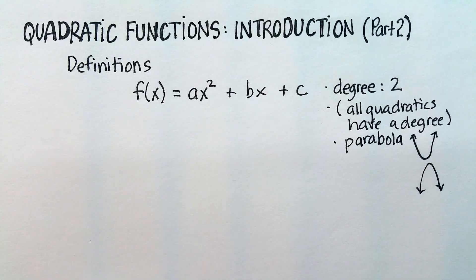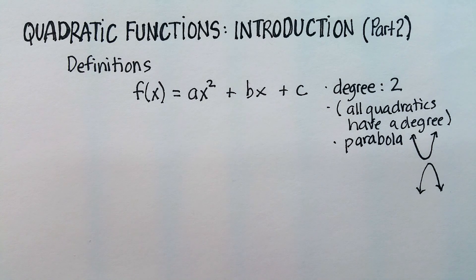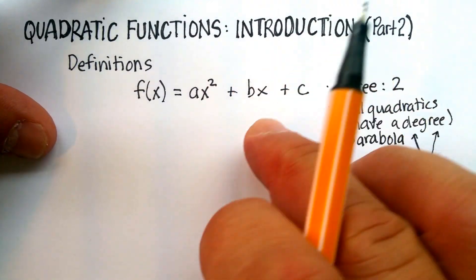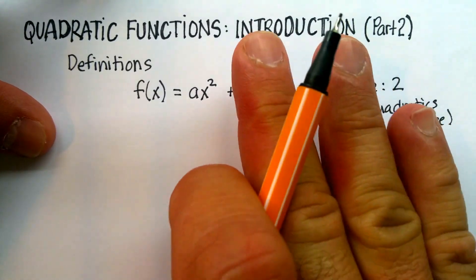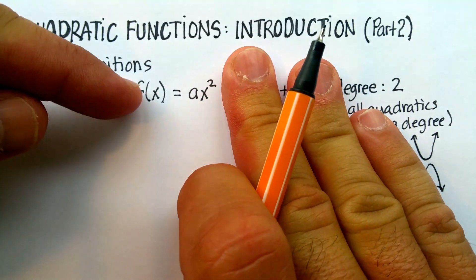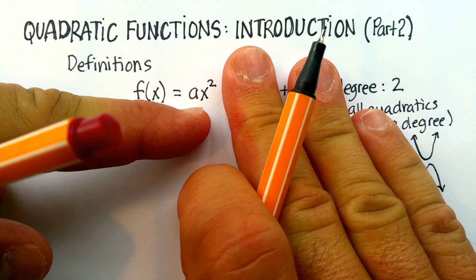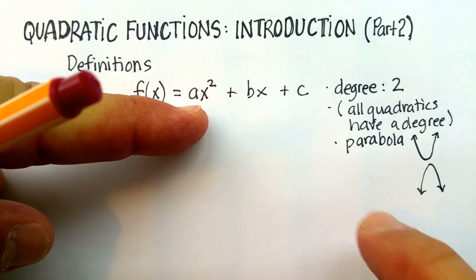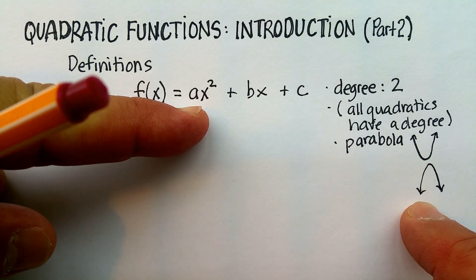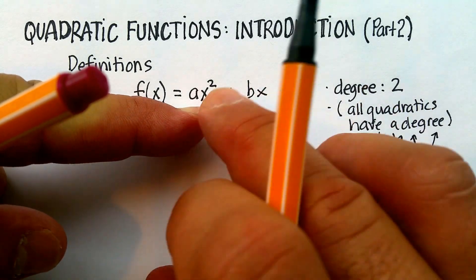Now, let's go back to the actual function itself. You'll notice that if I were to get rid of just the bx plus the c, and just had f of x is equal to ax squared, this is really all you need in order to be able to draw or graph a parabola or quadratic.